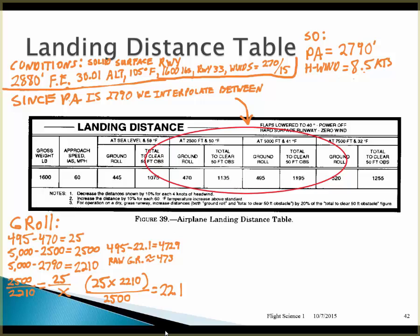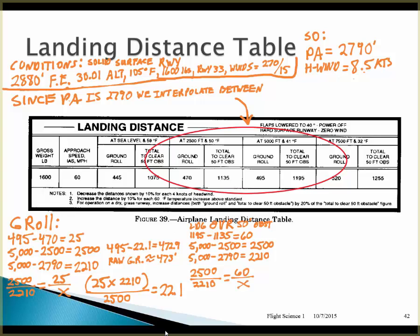The landing over a 50-foot obstacle works similarly. We find our initial difference and our differences between pressure altitudes, set up our proportion, and do the math. That yields a difference of 53, so 1,195 minus 53 gives a raw landing distance over a 50-foot obstacle of 1,142 feet.